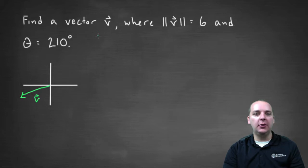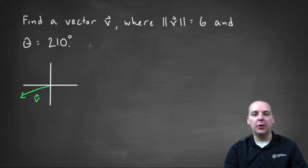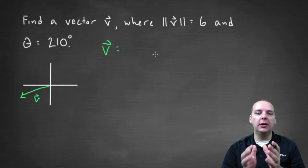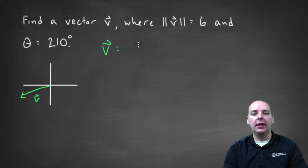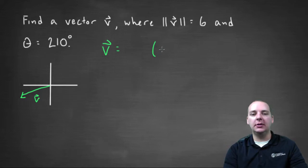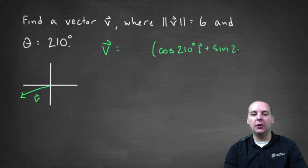We'll do this one with the standard unit vectors, though you could easily do it in component form as well. We'll write vector v as — first thing we need to do is find how to aim this vector in the right direction. To get it aimed correctly, we're going to take cosine of two-ten for the i-th component, plus sine of two hundred and ten degrees for the j-th component.